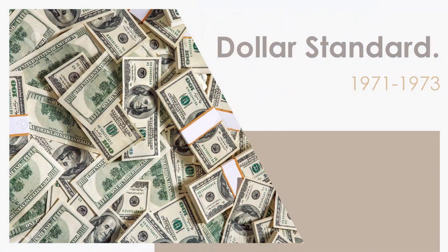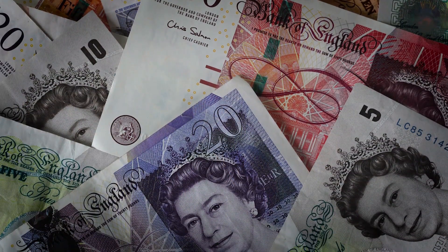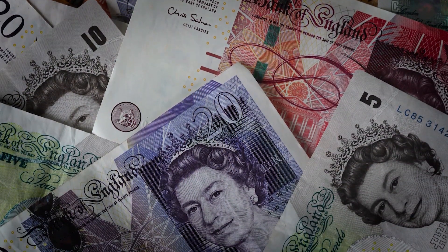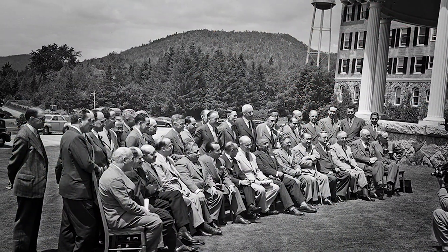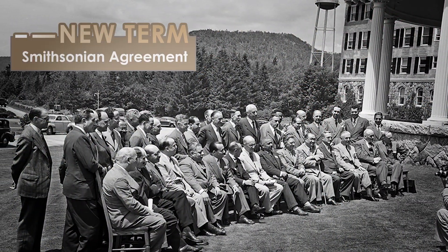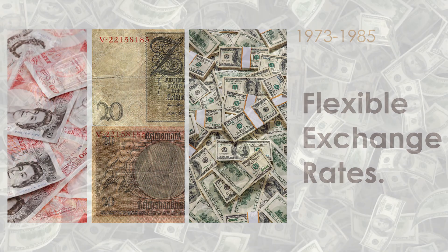On 15 August 1971, the United States unilaterally terminated convertibility of the US dollar to gold, effectively bringing the Bretton Woods system to an end and rendering the dollar a fiat currency. At the same time, many fixed currencies, such as the pound sterling, also became free-floating. After the collapse of the Smithsonian agreement, the major currencies of North America, Europe, and Japan floated.